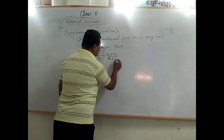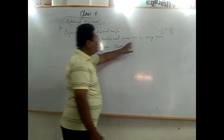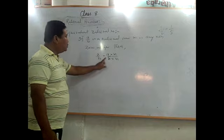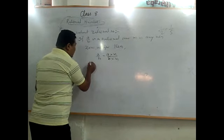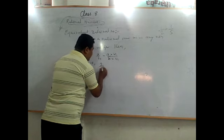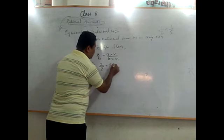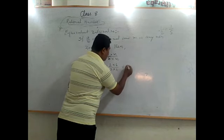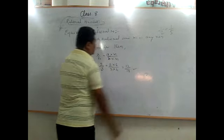As an example, 2 by 3 multiplied by, say, 3 gives us 6 by 9, and multiplied by 6 gives 12 by 18. So 2 by 3 is equal to 12 by 18. These are called equivalent rational numbers.